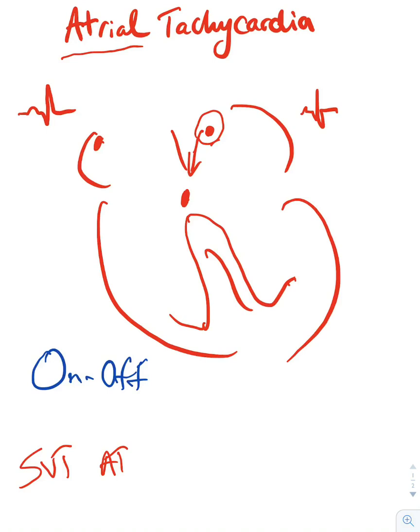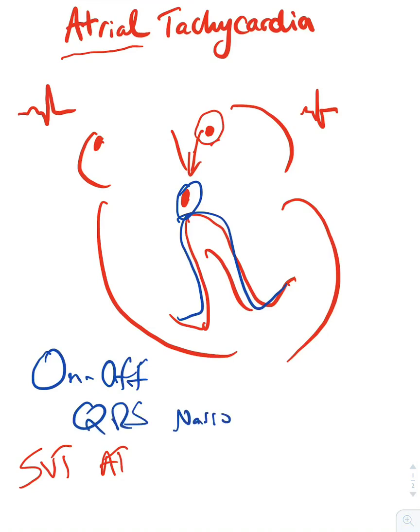Since it's an SVT and it goes through the AV node, the QRS is going to be narrow — unless there is aberrancy or a bundle branch block, in which case it will be prolonged.